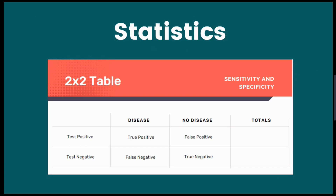Diagnostic tests can feature statistics that we've discussed in previous videos, but we will discuss some other statistics now which are likely to appear. These can assist with appraising the effectiveness of a test, although remember to always look at the paper as a whole. Normally, these statistics should be worked out for you, but it is useful to know how to calculate them in case they are missing or if you want to check the figures are correct.